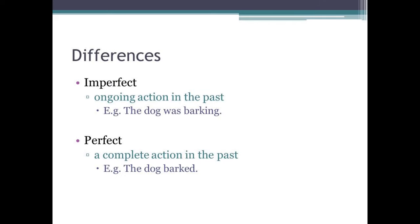Now that we've met both the imperfect and perfect tenses, let's highlight the differences. The imperfect represents an ongoing action that has happened in the past — for example, 'the dog was barking.' However, the perfect tense represents a complete action that has happened in the past — for example, 'the dog barked.' Notice the subtle difference.